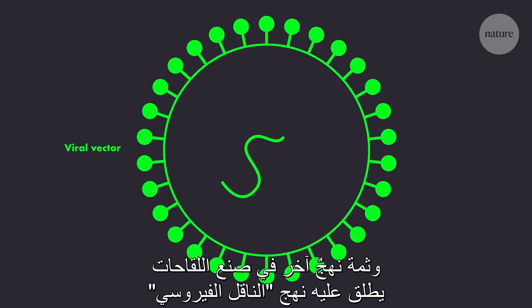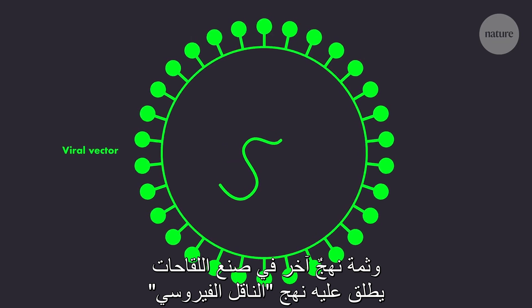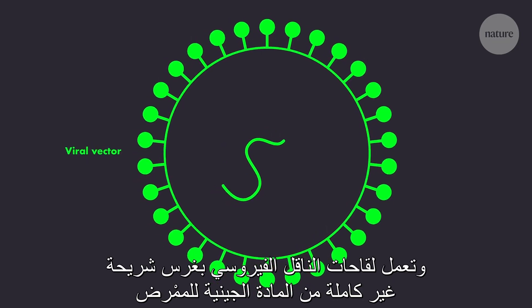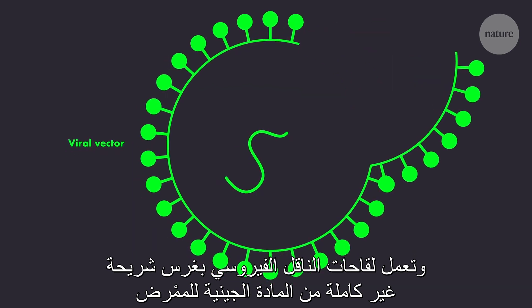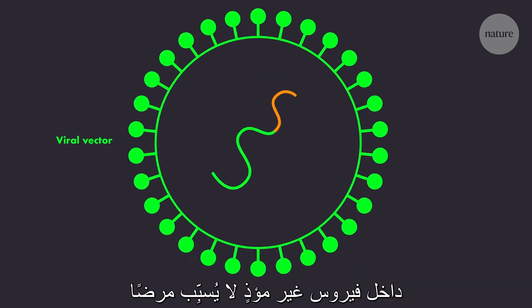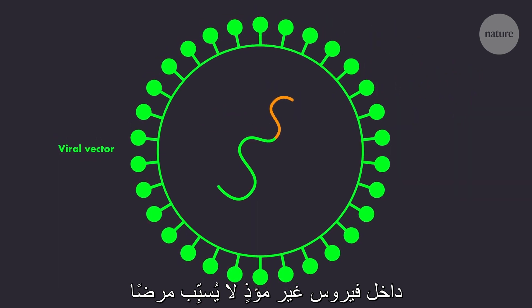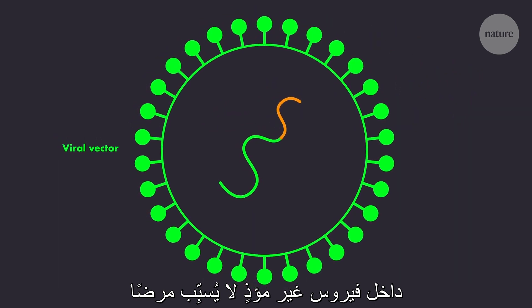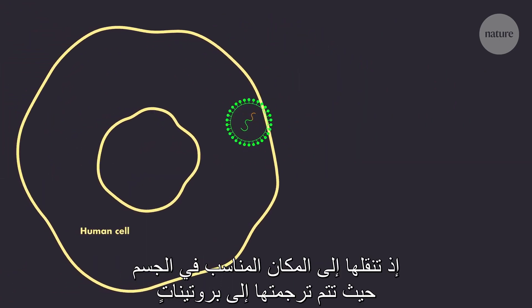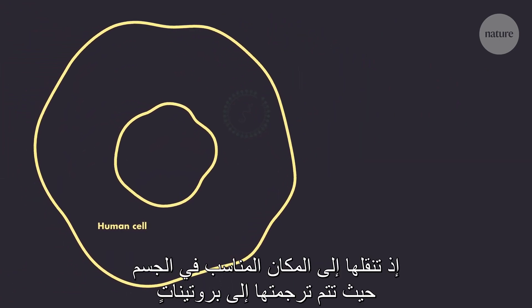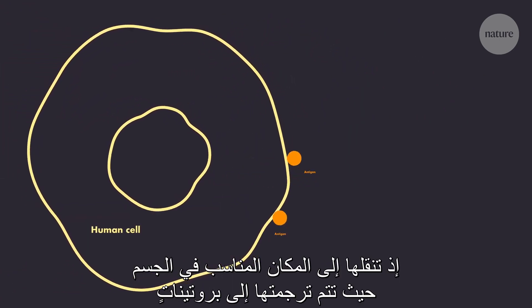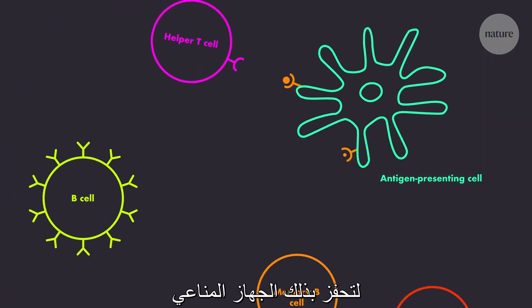Another approach is called a viral vector. Viral vector vaccines work by inserting an incomplete segment of genetic material from a pathogen inside a harmless virus that doesn't cause disease. This then acts as a vehicle for the genetic material, delivering it to the right place in the body where it can be translated into proteins triggering the immune system.